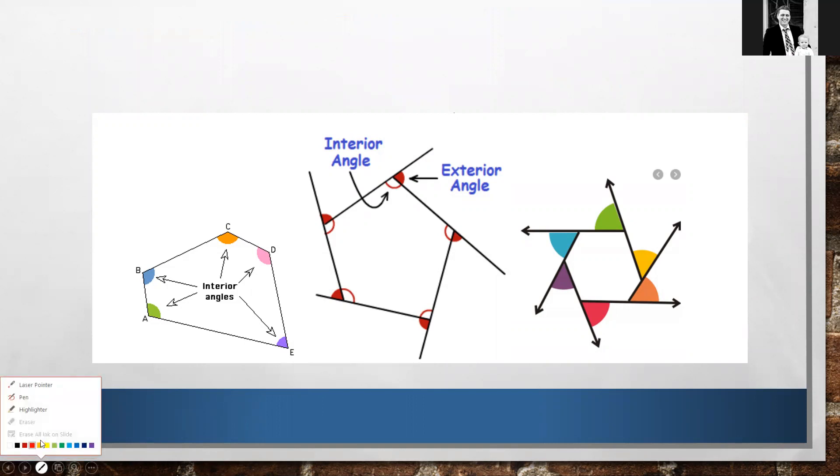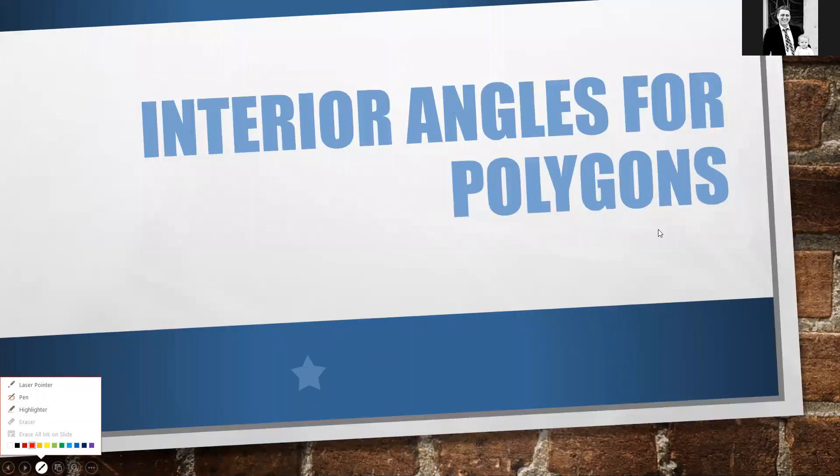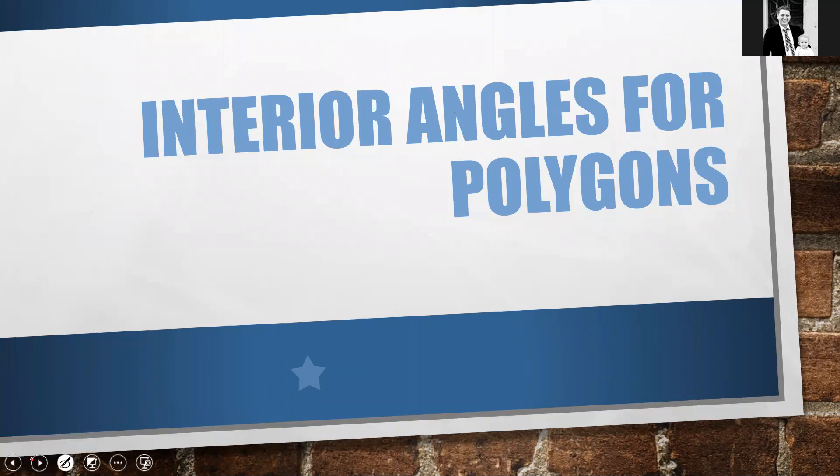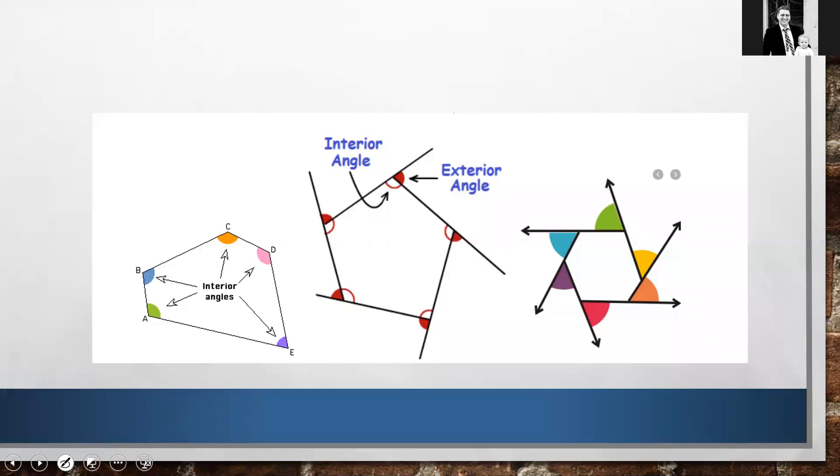Now, one thing I do want to discuss with you is what happens when we extend more than one side, and we have this angle that's vertical to the interior angle. That is not an exterior angle. Exterior angles are only happening when one side of the polygon is extended. So something to keep in mind that exterior angles are from one side extended. When you have two sides extended, you have something that is vertical to an interior angle, but not something that is an exterior angle.